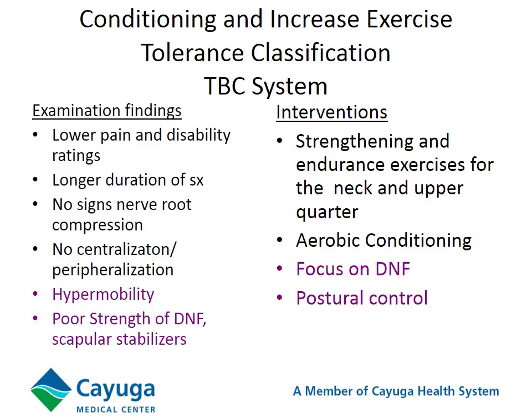The old conditioning and increased exercise tolerance category. Generally these are individuals with lower pain and disability ratings than, for example, the mobility or radiculopathy category. They generally have more chronic symptoms, will generally not have signs of nerve root compression or centralization or peripheralization. They may present with segmental hypermobility, and will oftentimes present with poor strength and endurance of the deep neck flexors and scapular stabilizers. Essentially, the idea with treatment is improved strength and endurance of the neck and upper quarter, some general aerobic conditioning, with a focus on deep neck flexor strengthening and adequate postural control.